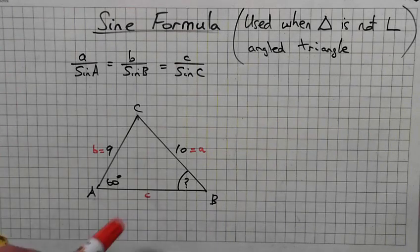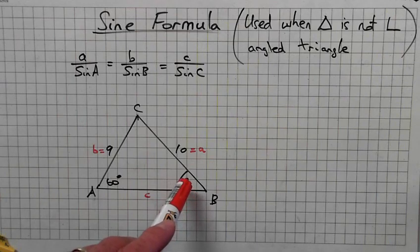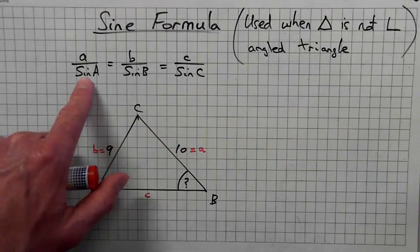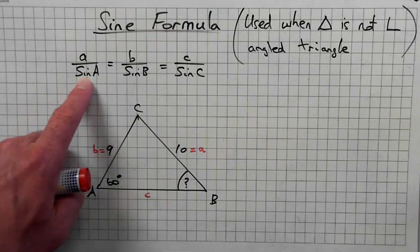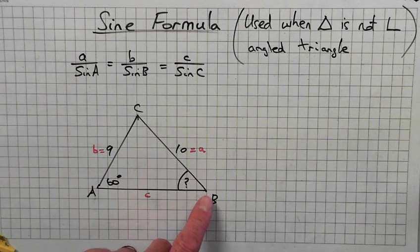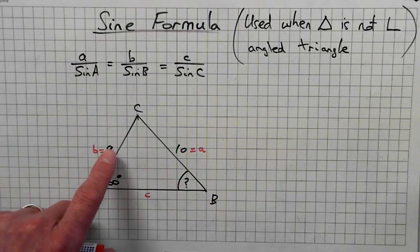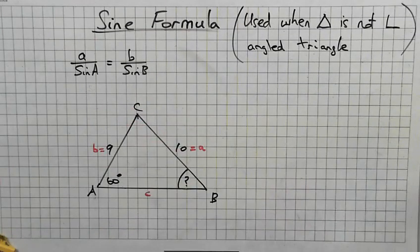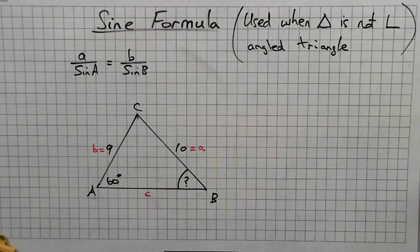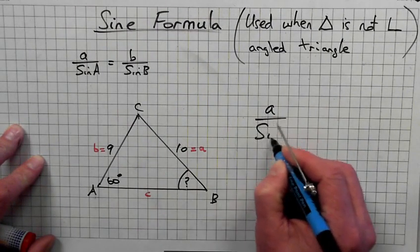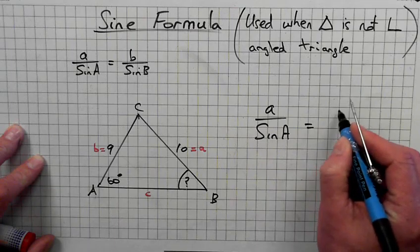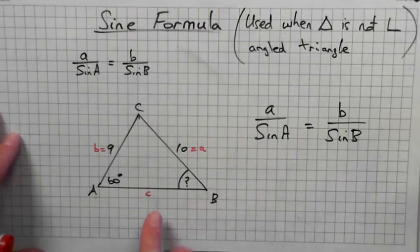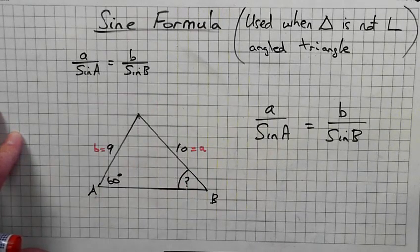Alright, so when using the sine formula, let's say we're looking for this angle. We have angle A and side a, so we have this angle A and side a. We're looking for angle B, and we have side b. So we'll use this formula here. We'll use the formula a over sine A is equal to b over sine B. We're not really considering, forget about c altogether.